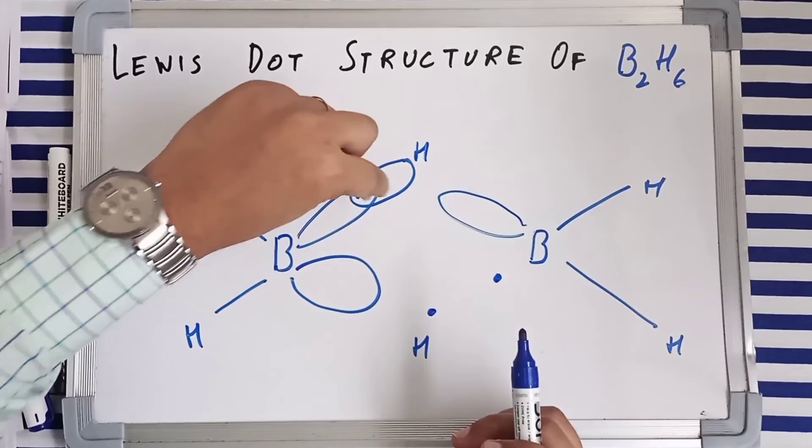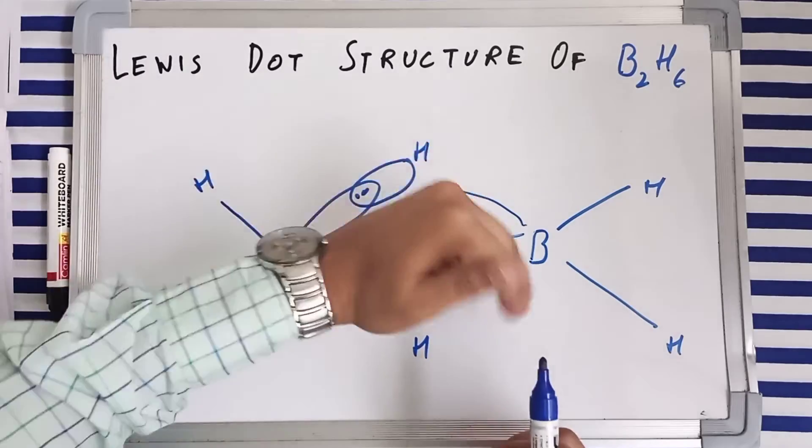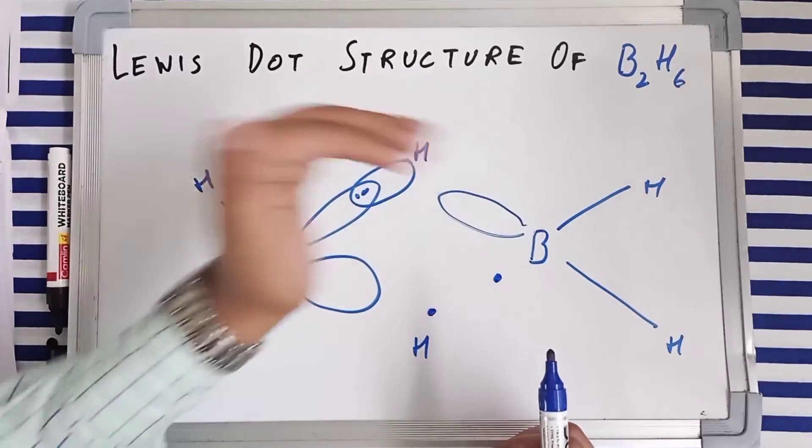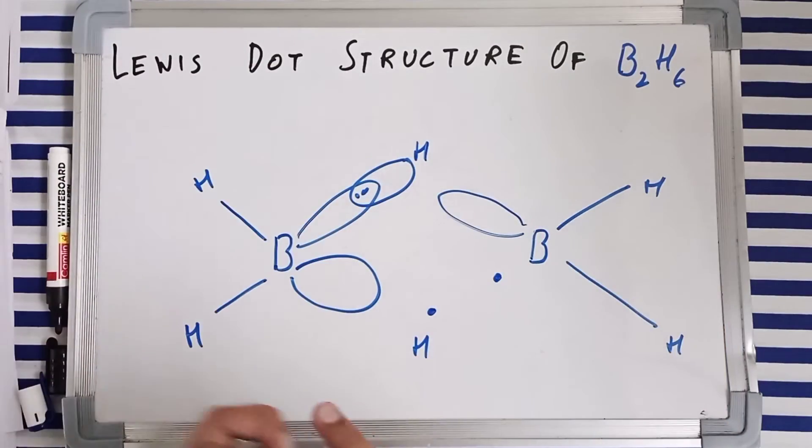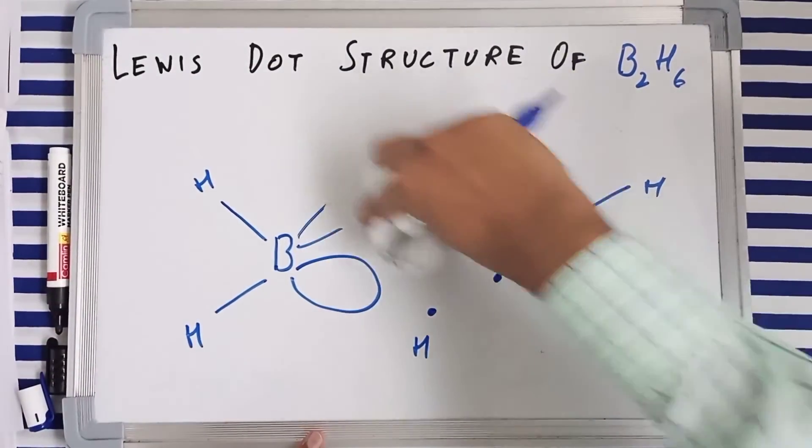So what can happen is that these two electrons will be moving in all of the three orbitals and will be shared by all the three centers.